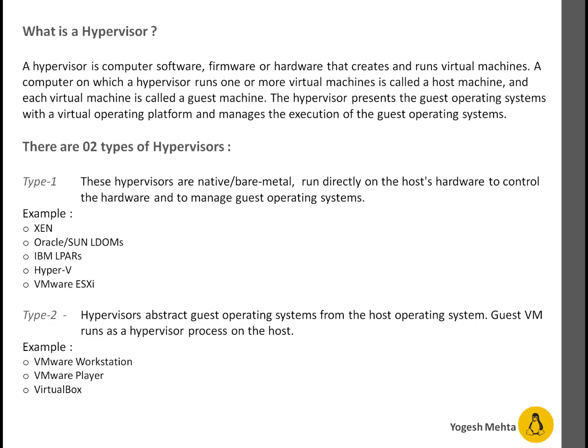Basically, these type one hypervisors are integrated or very closely integrated with the hardware. The type two hypervisors abstract the guest operating system from the host operating system. Guest VMs run as a hypervisor process on the host. Examples include VMware Workstation, VMware Player, and VirtualBox.